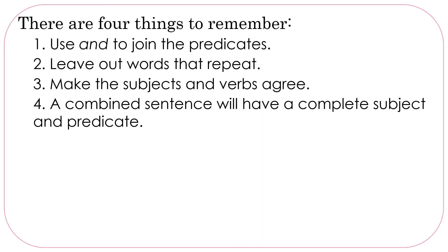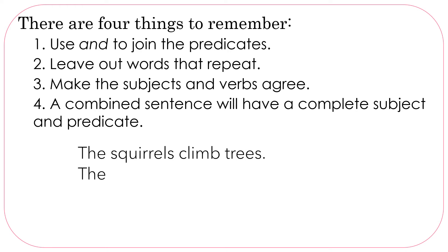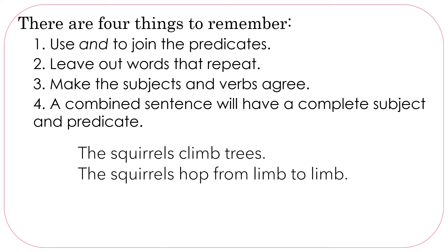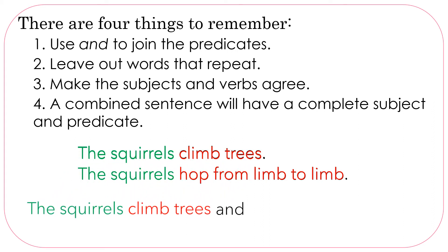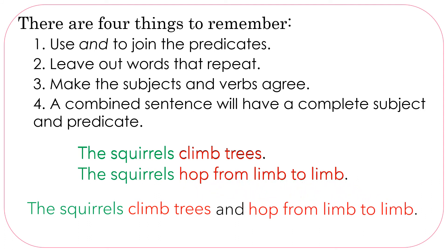Let's look at those sentences again if they have more words in the predicate. The squirrels climb trees. The squirrels hop from limb to limb. We have 'the squirrels' as the subject in both sentences, but this time the predicates are 'climb trees' and 'hop from limb to limb.' We can combine these sentences: 'The squirrels climb trees,' use our conjunction AND, and add 'hop from limb to limb.'